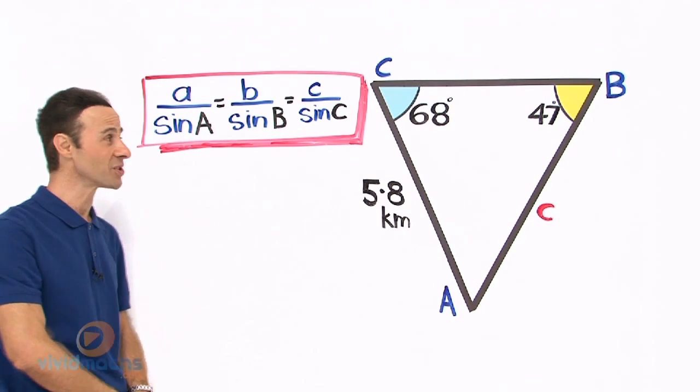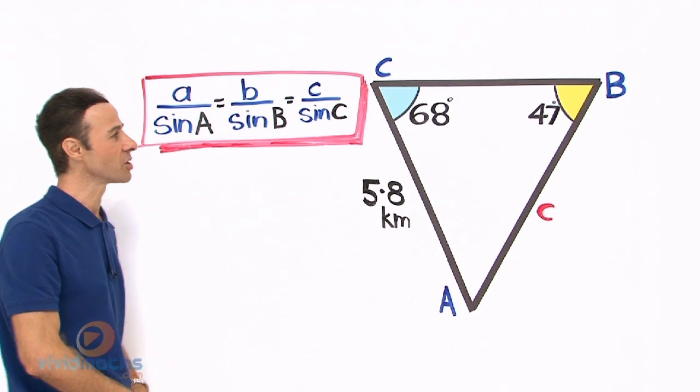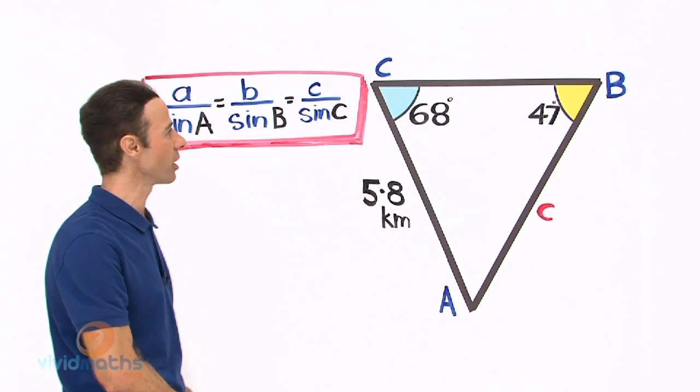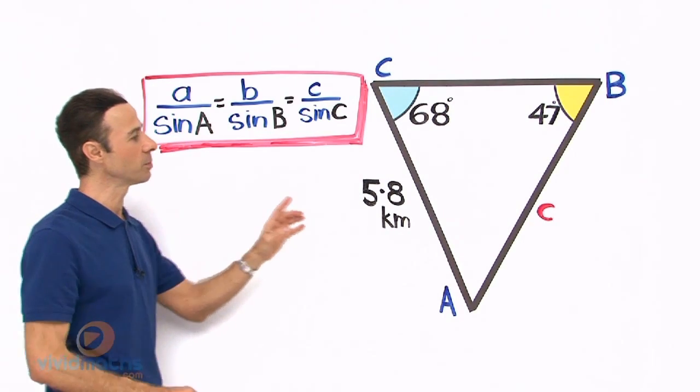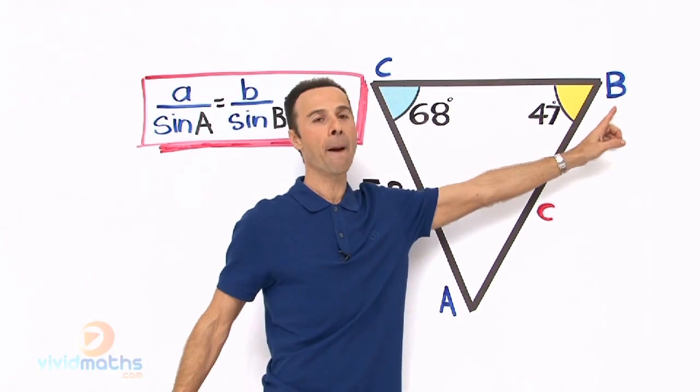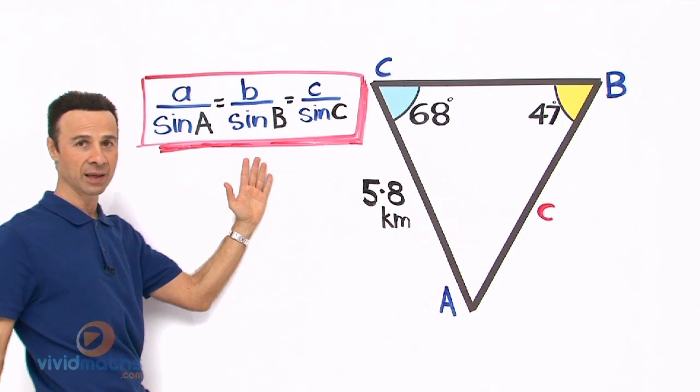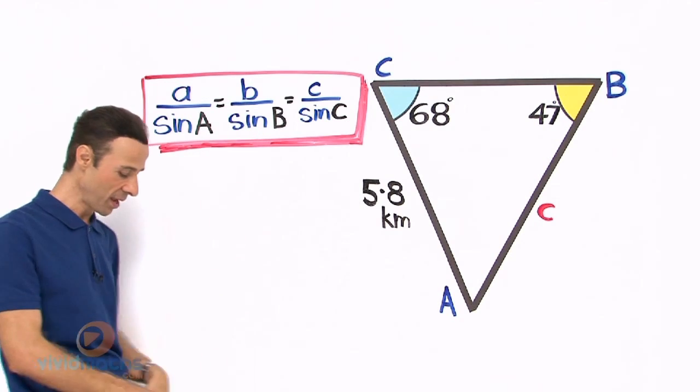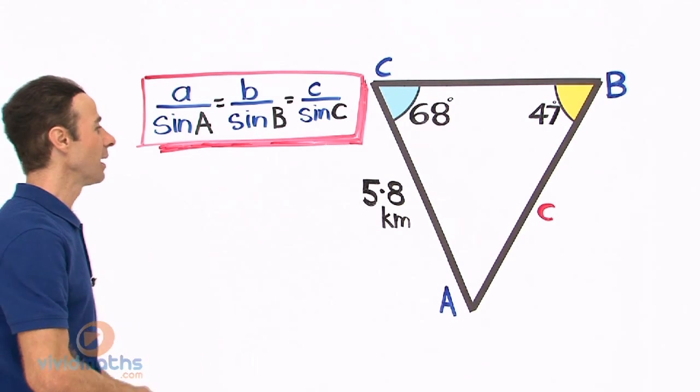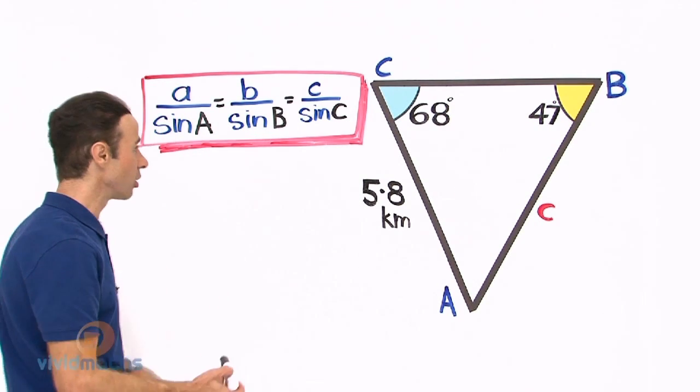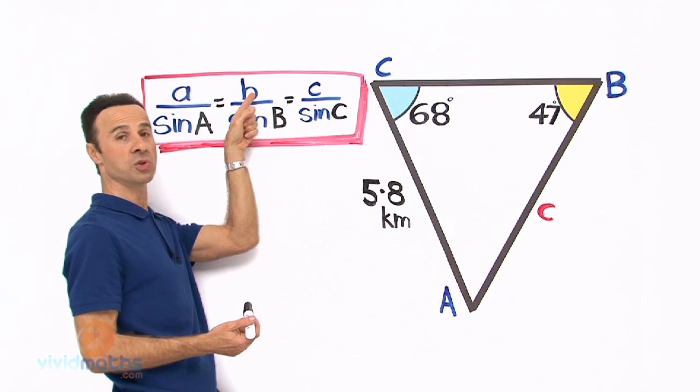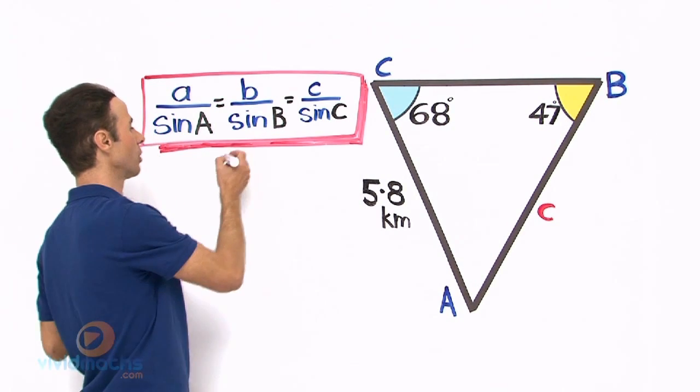So let us put the numbers into the formula. This triangle has already been labeled, so we have got little b here which is opposite big B right there. Let us start with this part of the formula. Little b is 5.8 kilometers, so there it is, we are substituting that in there.